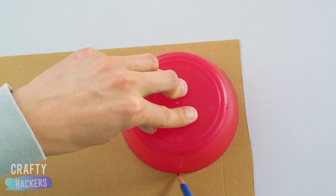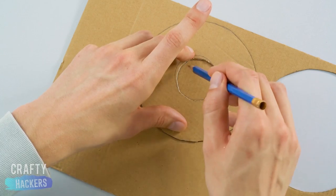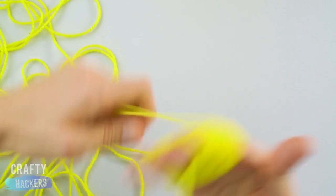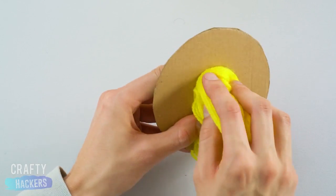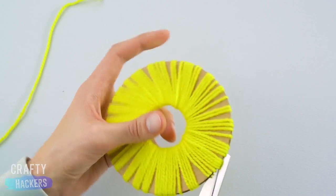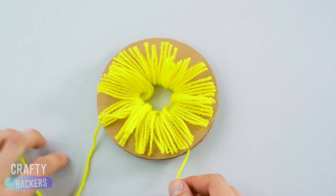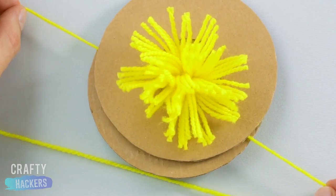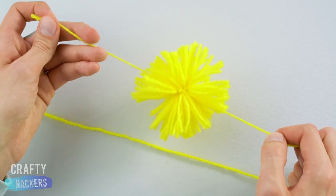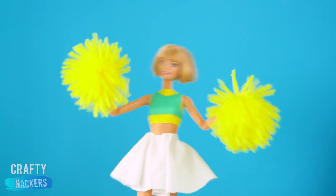Cheerleader pom-poms! Use a bowl and a small cup to trace two circles on a piece of cardboard. Cut out the shape and repeat with a second donut shape. Put the two pieces together. Next, wrap some yarn around your cardboard donut. Keep going until you've made it all the way around. Then, cut the yarn at the outside border of the donut. Now, wrap a large string of yarn in between the cardboard pieces and around the center of the yarn pieces. Tie and pull tight. To gather the yarn into a pom-pom shape, tie the yarn in a knot and trim. Follow the same steps to make a second pom-pom. And enjoy! Go team!